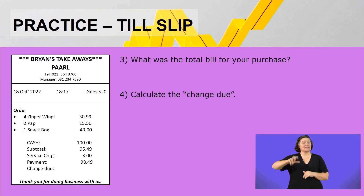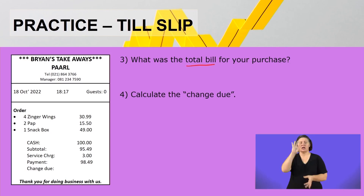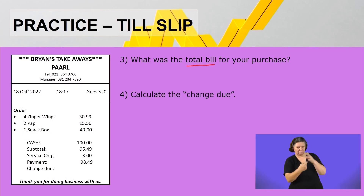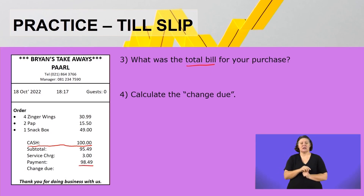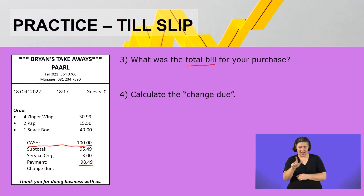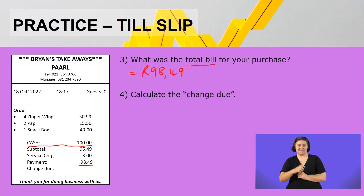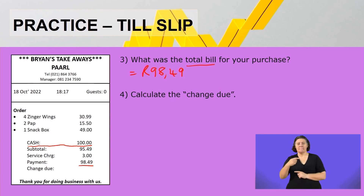We are still busy with till slips. Question number three says: what was the total bill for your purchase? We bought a few items here. It says cash 100, so that is what you've paid, but the payment shown is 98 rand 49 cents. So the total bill will then be 98 rand and 49 cents. It simply means that you had to pay 98 rand 49 cents and you gave them 100 rand.